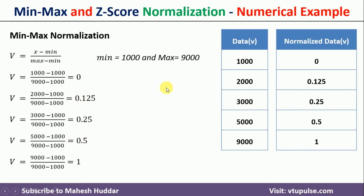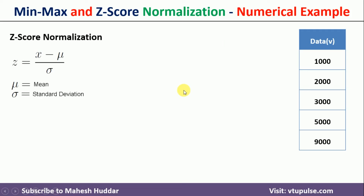Similarly, I will now apply z-score normalization to convert these data points into normalized values. In z-score normalization we use the equation: z equals x minus mu, divided by delta — where mu is the mean and delta is the standard deviation. First we calculate mu and then delta, then we substitute each value of x (1000, 2000, and so on) to get the normalized values.